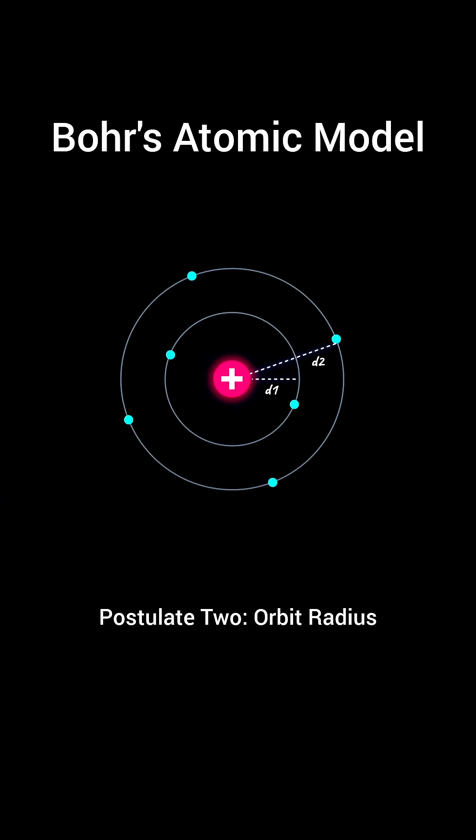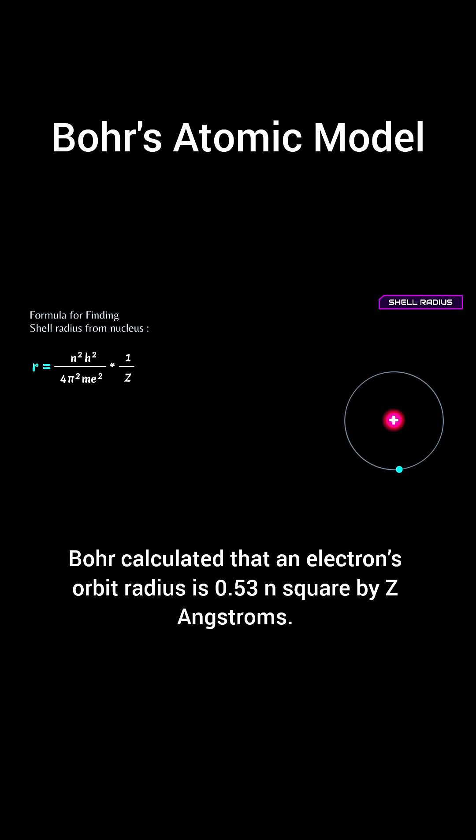Postulate 2: Orbit radius. Bohr calculated that an electron's orbit radius is 0.53 n-square, by z angstroms.